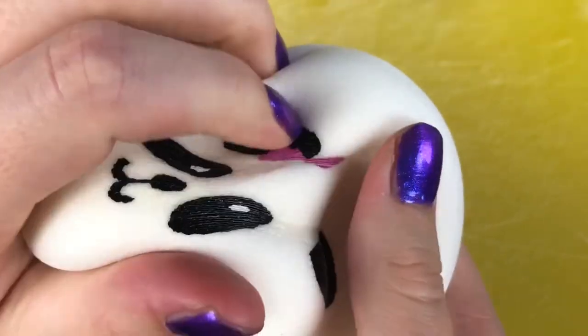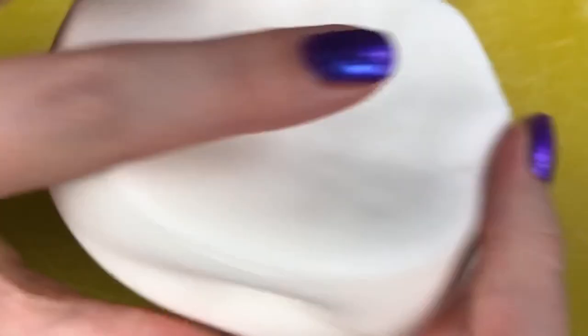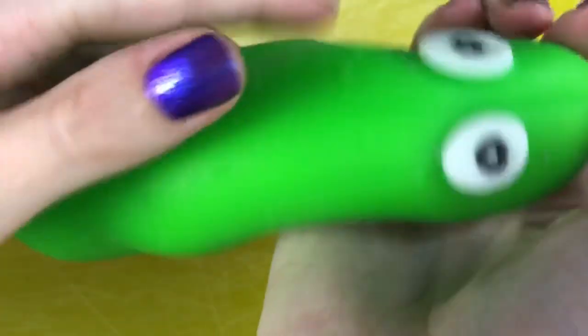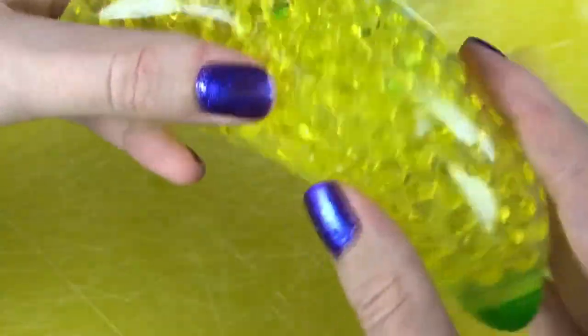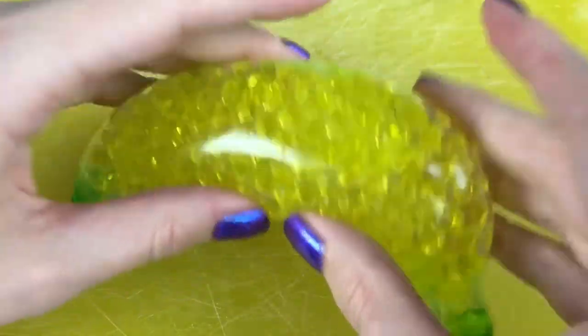They've got some normal just like foamy squishies, like the slow rising ones. Got like a bigger version. This one feels like it's filled with flowers and something. This one's really sticky. It matches the background. It's a banana.